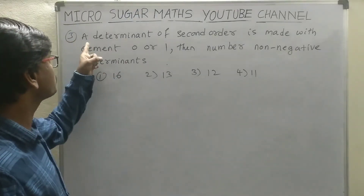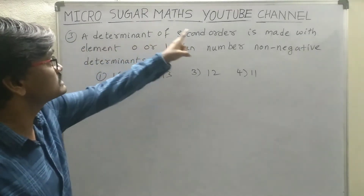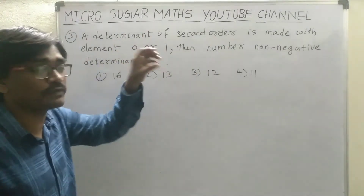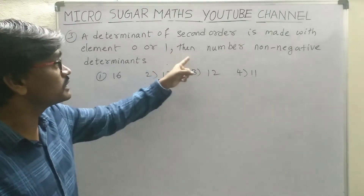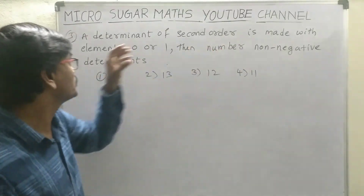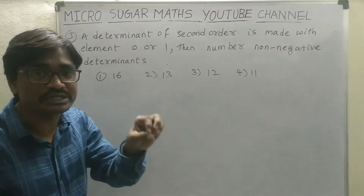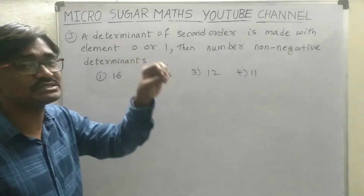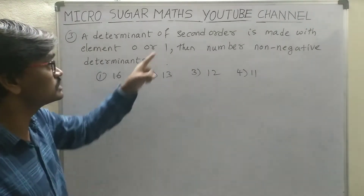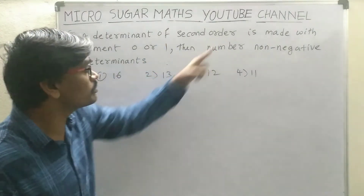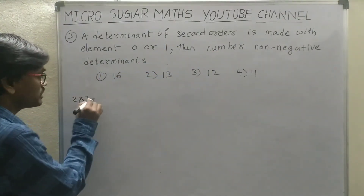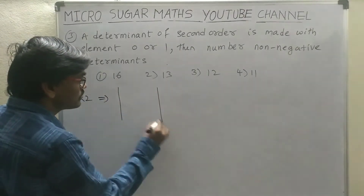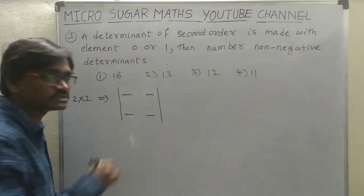Our next problem: a determinant of 2nd order is made with elements 0 or 1 only. Then the number of non-negative determinants — meaning positive determinants — we need. Students, what is the order? 2 by 2 matrix, 2 by 2 determinant. Therefore in a 2 by 2 determinant, how many places do we have? 4 places we have.